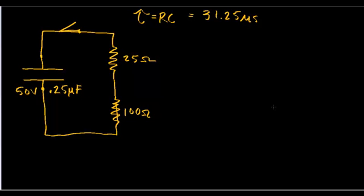Let's take a look at problem 31.72. We have a capacitor and we're going to close the switch and let the charge drain out of the capacitor. What's going to happen is that some of the energy in the system is going to leave the system as thermal energy.